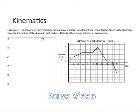There are times where you may be asked to interpret a graph, such as the case here. Example one: the following graph represents the motion of a student in a straight line, either east or west in the classroom. Describe the motion of the student in each section.